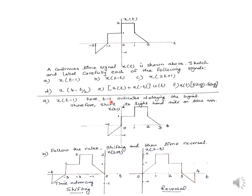Starting with the first one, X(T-1): here T-1 indicates delaying the signal, so we shift the same signal to the right hand side by a value of 1. This signal starts appearing at T equals minus 2, and after shifting by 1 it starts at minus 1. Whatever value you have between 0 and 1 with amplitude 2 will now appear between 1 and 2, and the part between 1 and 2 will appear between 2 and 3 — it is a complete shift of the signal to the right by 1.